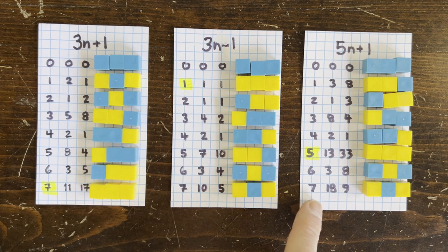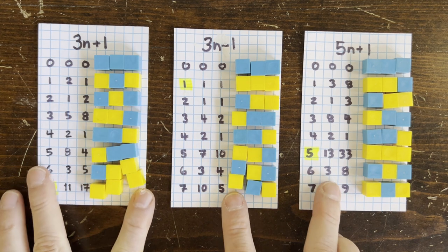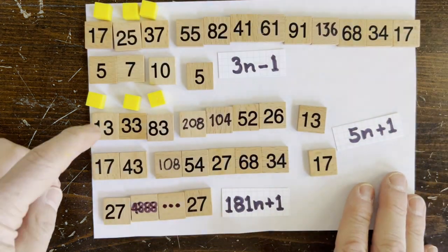And for the 5n plus 1 problem, numbers 5 mod 8 do the rocketing. And sure enough, 13 is 5 mod 8. So that's a good explanation.